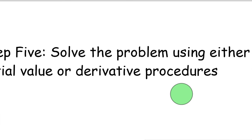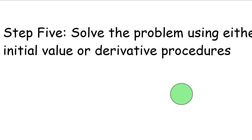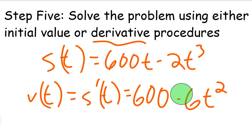So let's go ahead and go to step five, which is solve the problem using either initial value or derivative procedures. So in this case, we're going to be using derivative procedures. We're going to take the derivative of S(t). So when we take the derivative, we get V(t). We're going to use the power rule. We get 600 minus 6t squared for velocity.